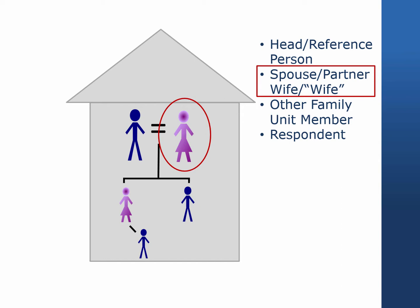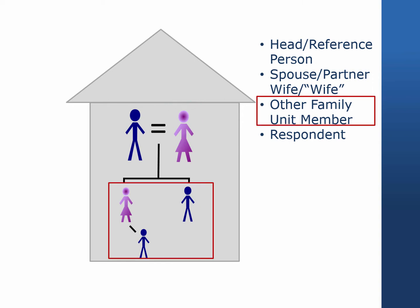This change also corresponds with the ability to identify same-sex couples in the data. The term other family unit member, or OFEM, is used for members who are not the reference person or spouse or partner. Considerably less information is collected about OFEMs in the main interview. Co-resident boyfriends and girlfriends who have been in the household less than one year are treated as OFEMs. Minor and adult children in the household are also considered OFEMs. Finally, college students and other members of households who are in institutions are considered institutional OFEMs.